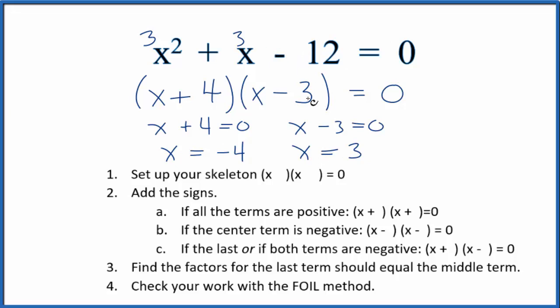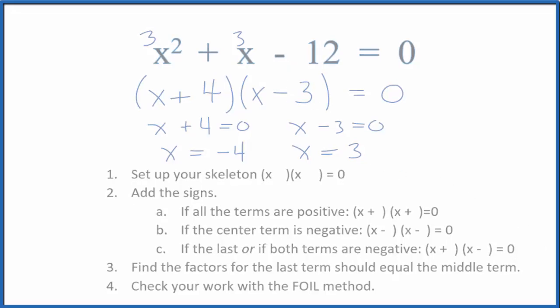So these are two solutions for this equation. This is Dr B factoring the equation x squared plus x minus 12 equals 0.